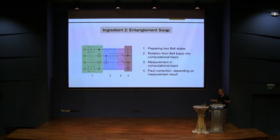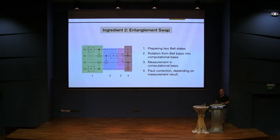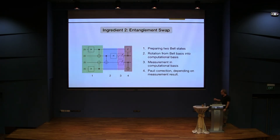So it's a way of, essentially, if you have three parties — two parties connected to an intermediary — using entanglement, there is some measurement the intermediary can do, and some local corrections the two parties have to do, so that in the end they share the entanglement directly. This is a basic ingredient in all kinds of quantum networking situations. This is what we want to use to distribute our entanglement.